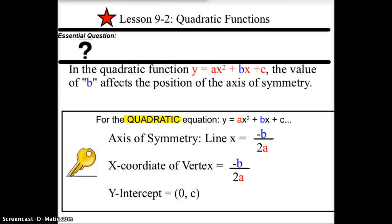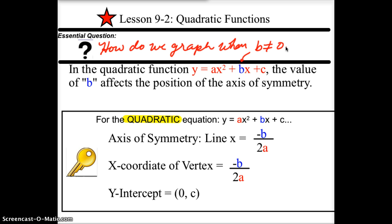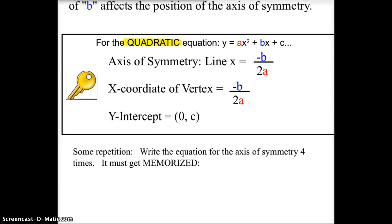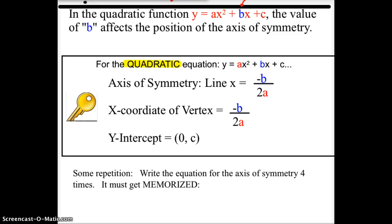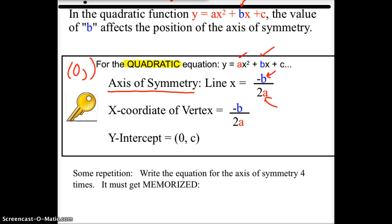Our essential question is: how do we graph when that middle term, which we call b, is not equal to 0? It's actually just a formula — one you won't understand where it comes from until a much higher level of math, so for now you've just got to memorize it. The axis of symmetry gets moved according to these two values, and the formula for finding where it moves is negative b — the opposite of the middle term — over twice a, or twice the lead term. When b is 0, that ends up being 0, which is why we were always sitting at (0, something) with the vertex living on the y-axis.